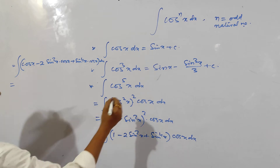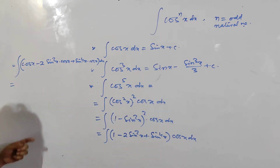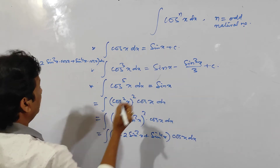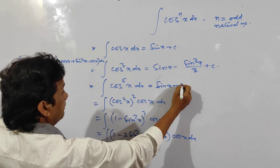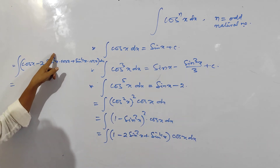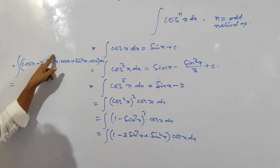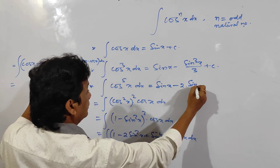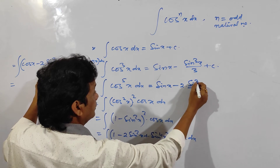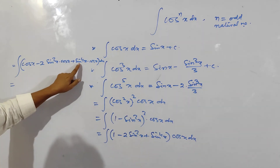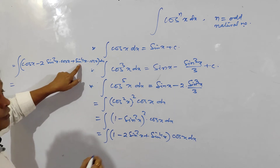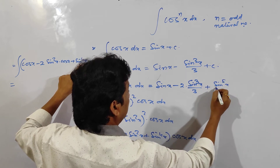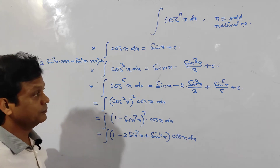After multiplication we get cos x minus 2 sin square x into cos x plus sin^4 x into cos x, all into dx. Using the formula f(x)^n into f'(x) dx = f(x)^(n+1)/(n+1): integration of cos x is sin x, then minus 2 times sin cube x by 3, and then sin^5 x by 5 plus c.